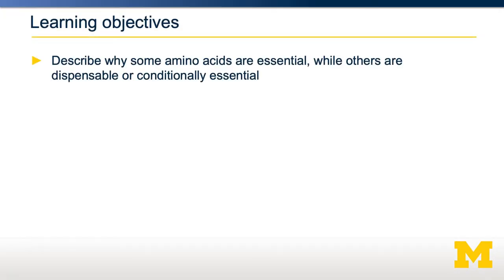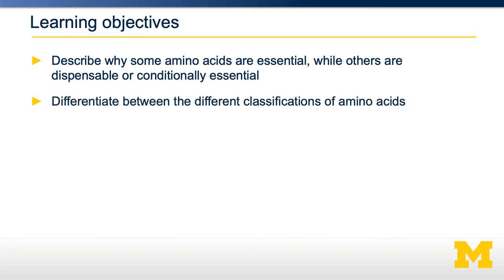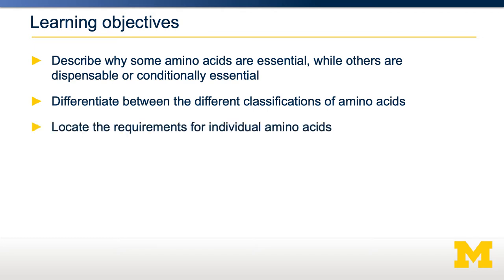We're going to describe exactly why certain amino acids are essential, while others are either conditionally essential or entirely dispensable. We're then going to differentiate between these different classifications, and I'll give you some handy mnemonics to separate them. Then we're going to talk about what the individual requirements are for each amino acid, how they vary, and what they look like in context with total protein requirements.